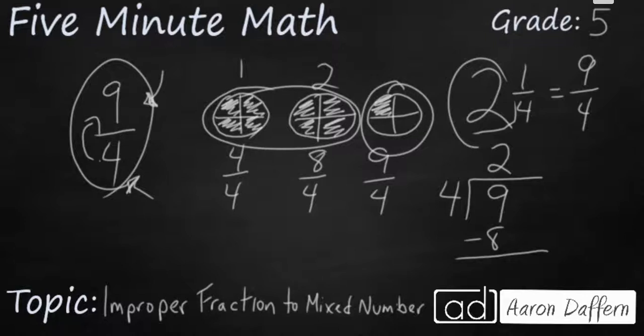9 minus 8 is going to be 1. That's our remainder, and that signifies that we've got one little piece left over. So what that 1 is, is the remainder becomes the numerator, and don't forget your denominator is going to stay as a 4. So you can do it with a picture. You could do it by just using division.